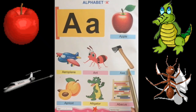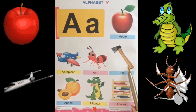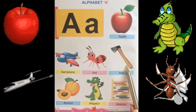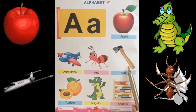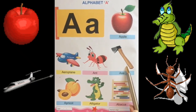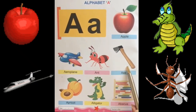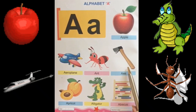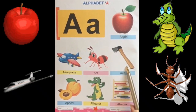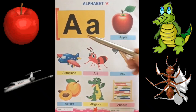Axe. Axe is a useful thing. It is used to cut wood. Iski help se wood ko kaata jaata hai. Means lakdi ko kaata hai.